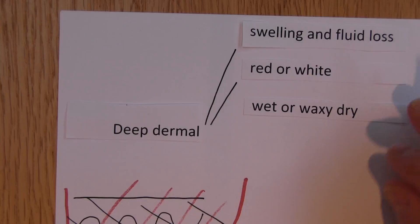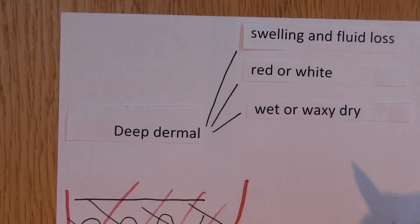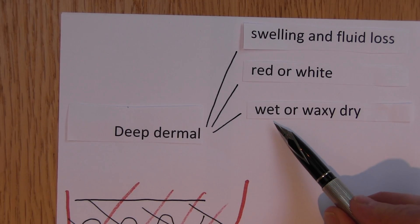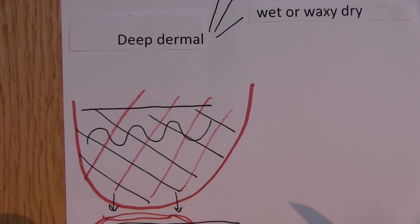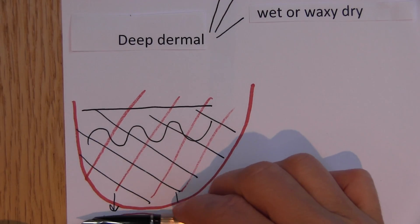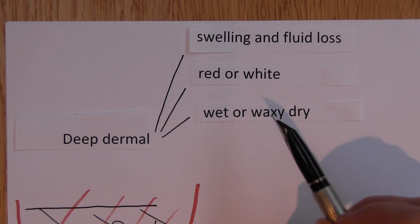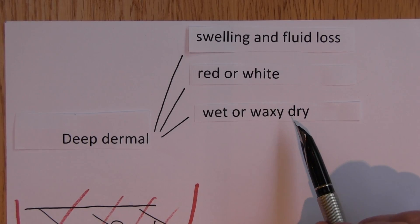Very often these have a wet or a waxy dry appearance. So these wounds are typically not as wet as the shallow dermal, because of course in the shallow dermal there's a lot of vasculature left. But in the deeper dermal, less vasculature left, and very often we get this waxy white, waxy dry looking appearance.